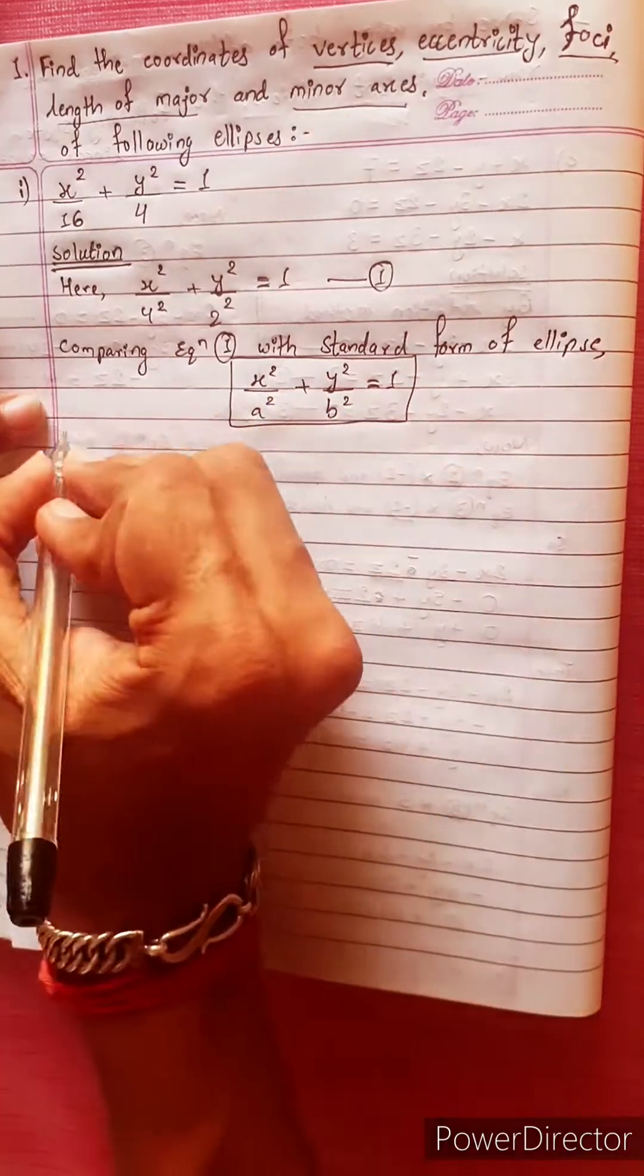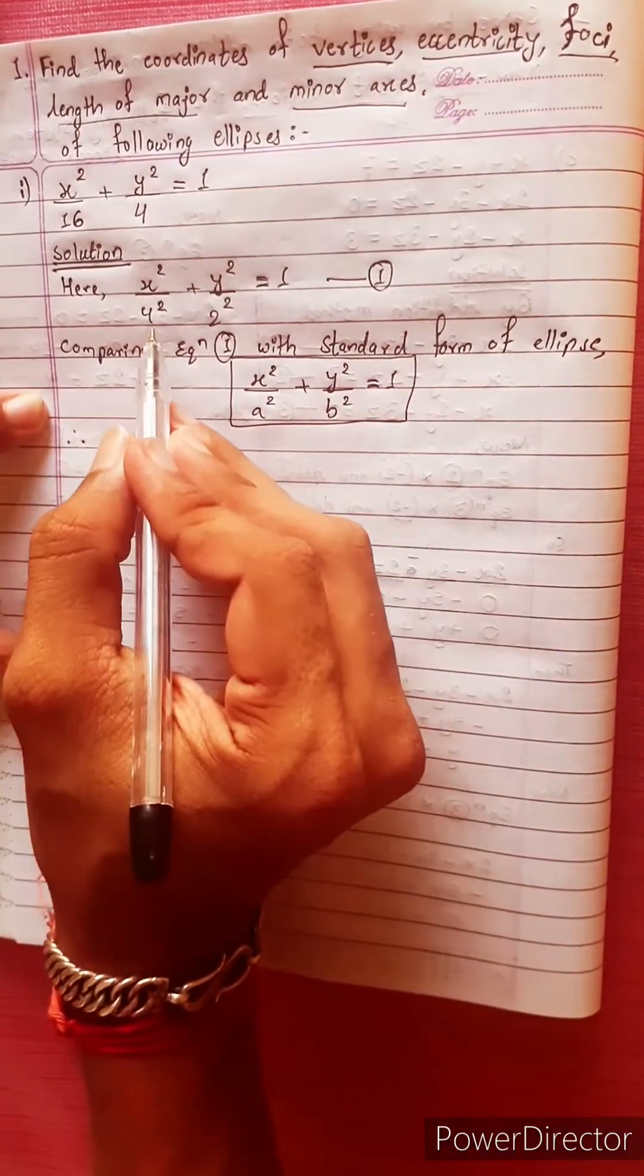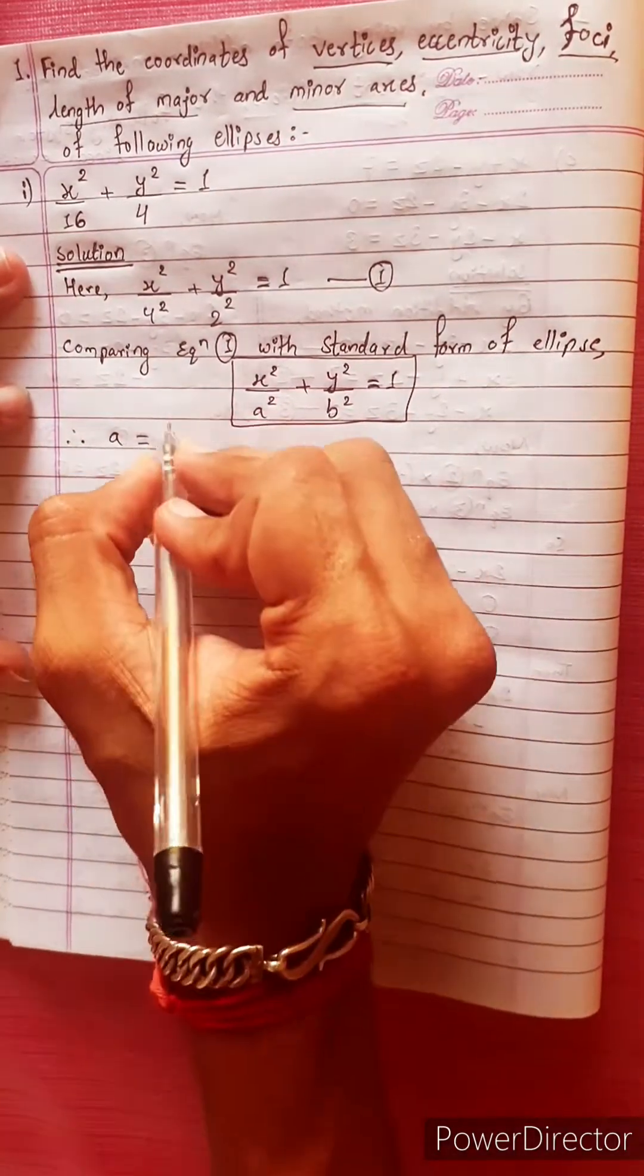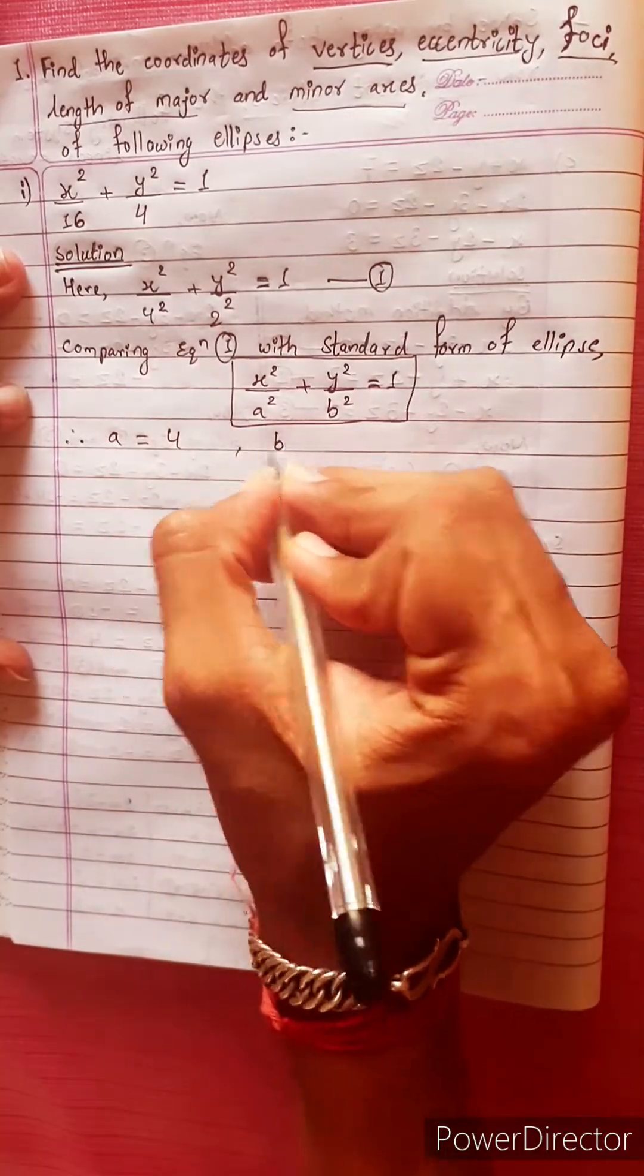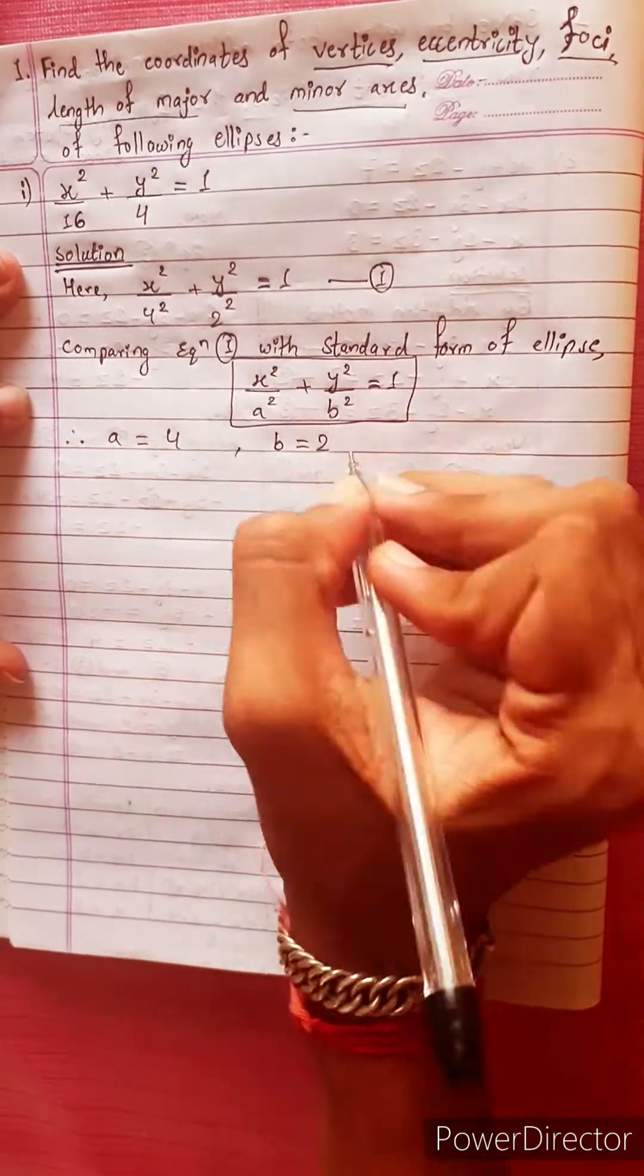Now comparing, we get the values. Therefore, a squared equals 16, so a equals to 4. And b squared equals 4, so b equals to 2.